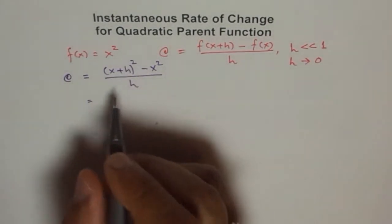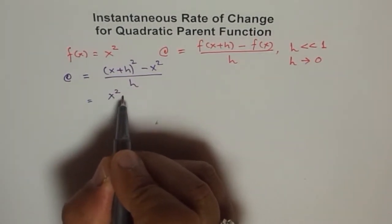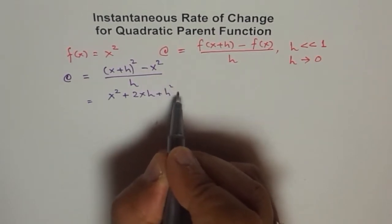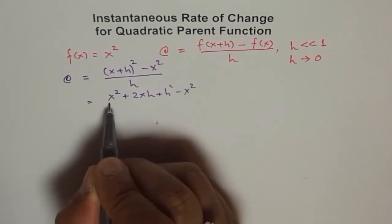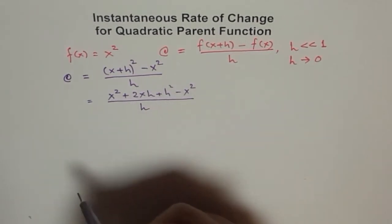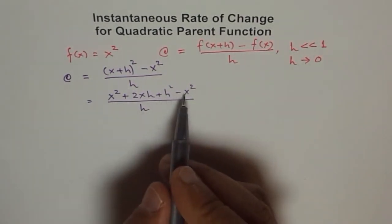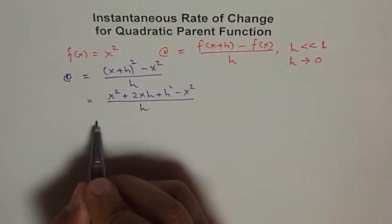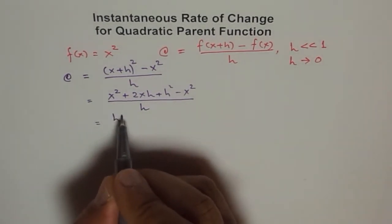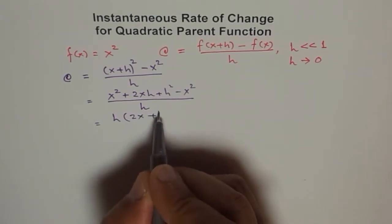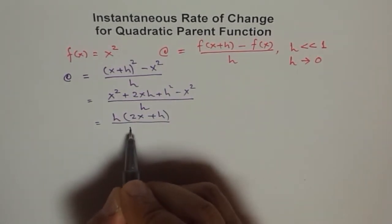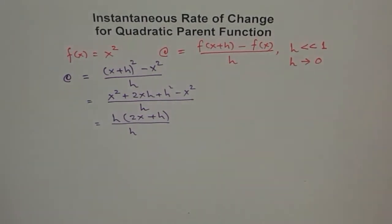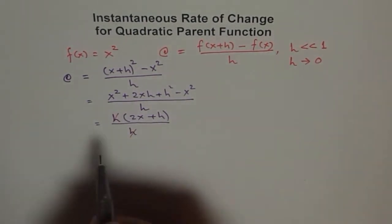We will expand it. Using the (a+b)² formula, we get x² + 2xh + h² minus x² over h. Now x² minus x² is 0, and we are left with 2xh + h² over h. Taking h common, we get h(2x + h) divided by h, and h cancels, leaving us with 2x + h.